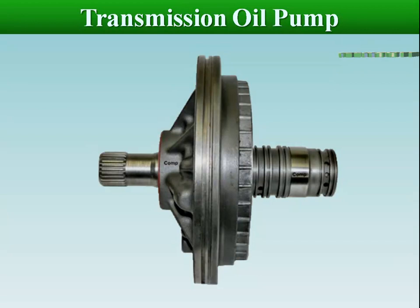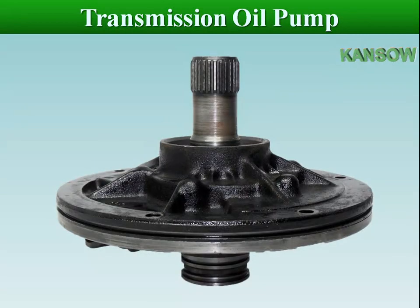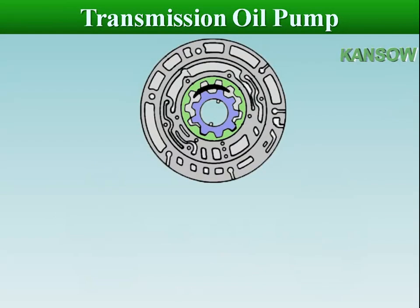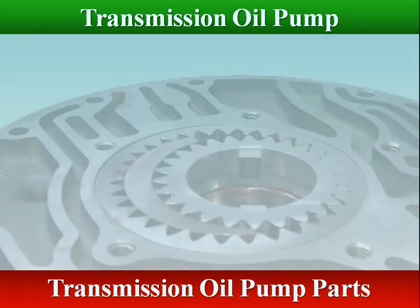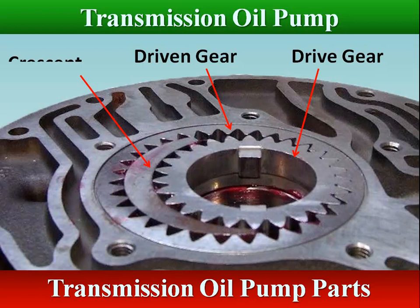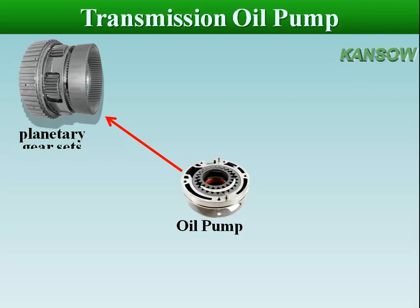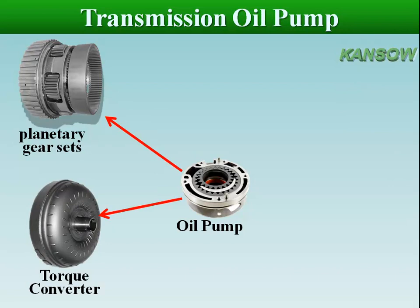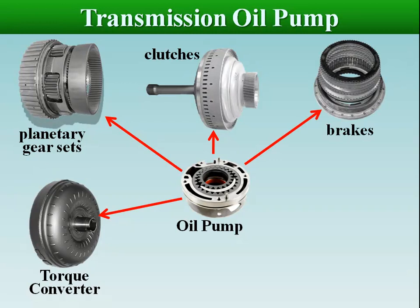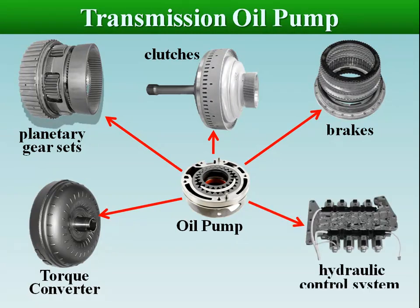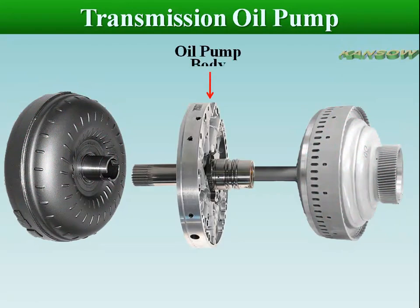Many parts of automatic transmission require a continuous supply of fluid under pressure, normally provided by a fixed displacement pump. The transmission oil pump is designed to provide fluid to lubricate the planetary gear set, to provide continuous fluid to the torque converter, to provide a volume of fluid to the clutches and brakes, to supply operating pressure to the hydraulic control system, and to provide support for the torque converter stator shaft as well as the front of the planetary gear set.